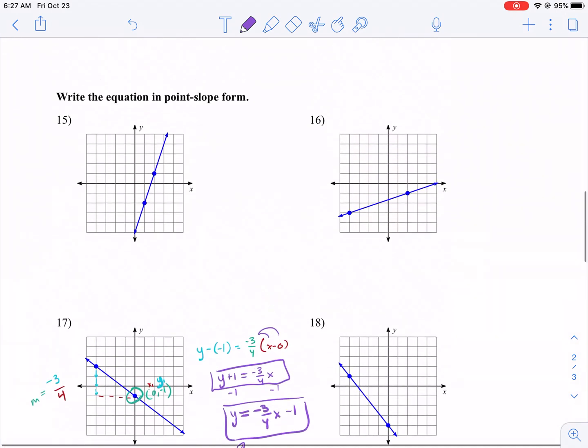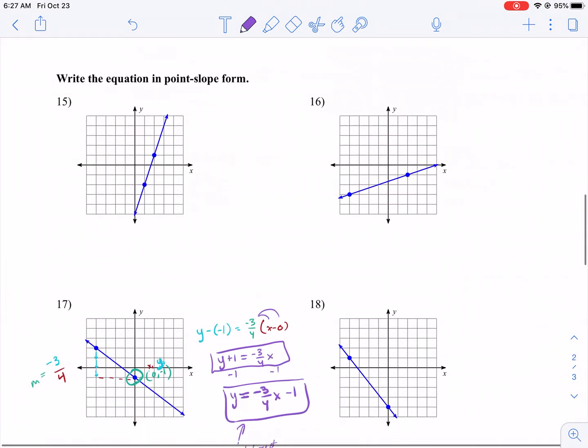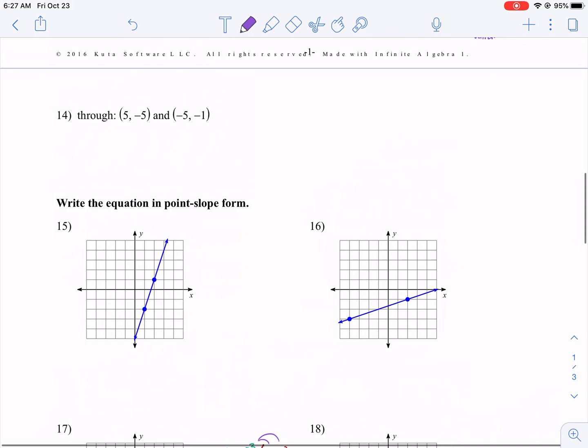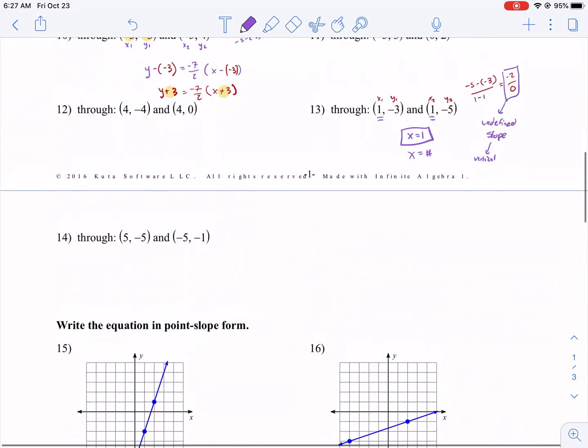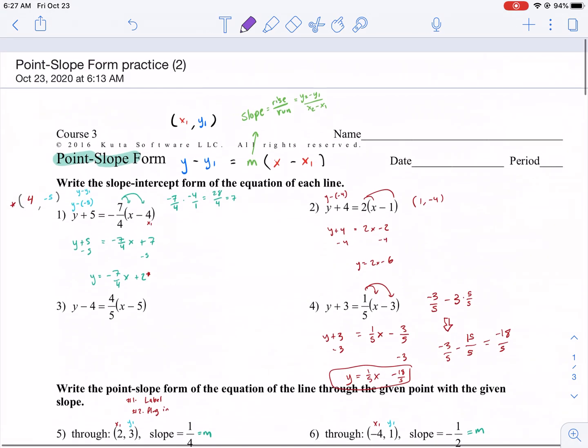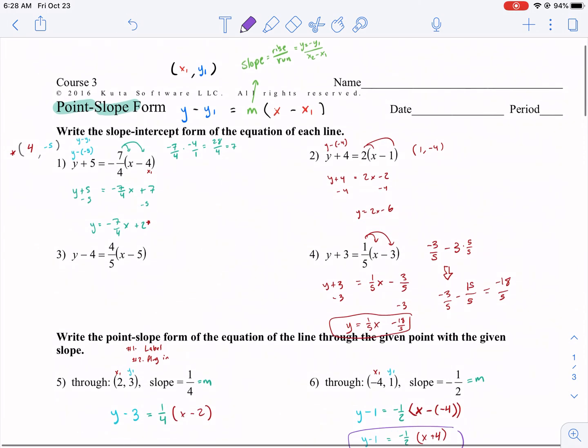That's all I got for you today. All these ones, you can do the similar process. Or if you want, you can label the points and do y2 minus y1 for the slope over x2 minus x1. But it's fairly simple. I like point-slope form a lot, and I hope after this video, you like it too. Thank you so much for watching. I'll see you next time.